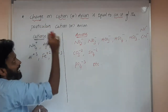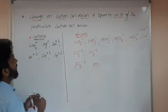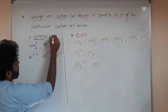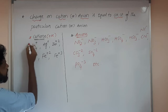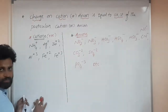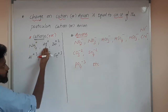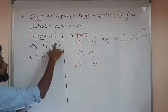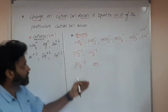For example, cations are positive ions. The ammonium group NH₄ has a plus one charge for the whole group — not for nitrogen or hydrogen alone, but for the whole group. Other cation examples include Na⁺ (plus one), Zn²⁺ (plus two), aluminium (plus three), and iron as ferrous or ferric.